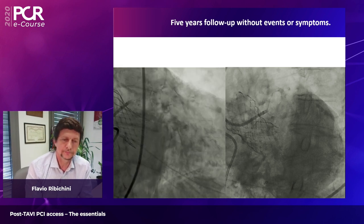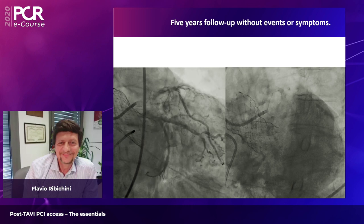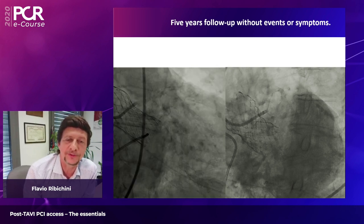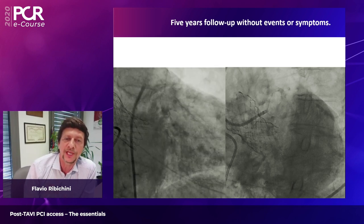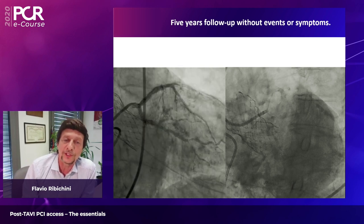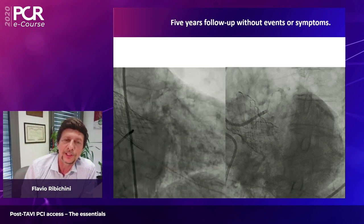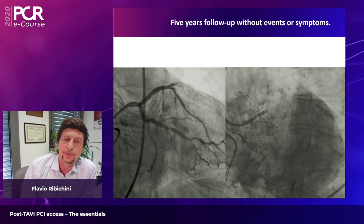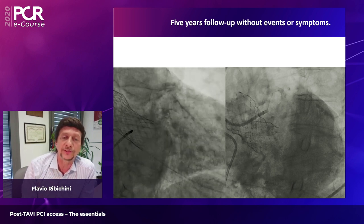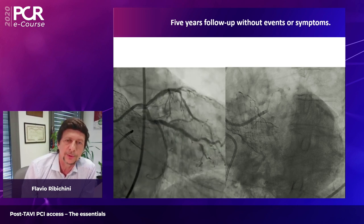Many will ask: why not stent the artery before putting the valve in? We believe the main problem for these old patients with aortic stenosis is the aortic stenosis itself. Most coronary findings are incidental. Performing complex PCI in a patient with severe aortic stenosis and LV dysfunction is more risky than performing the same procedure after you have resolved the aortic stenosis. You may be concerned about difficulties going through the CoreValve, but in our experience this is not a problem — it may be more demanding, but it is always achievable.